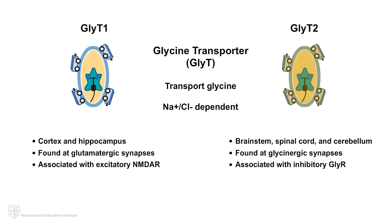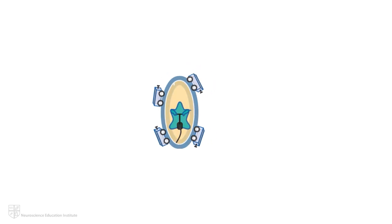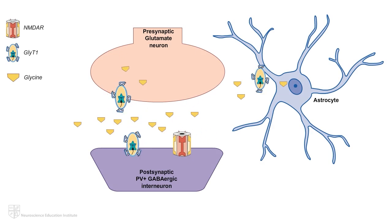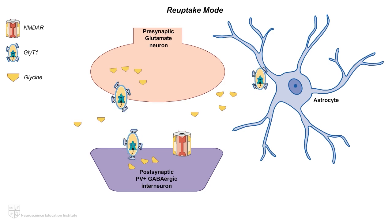With regards to this four-part Mechanism of Action animation series discussing NMDAR hypofunction in cortical networks underlying CIAS, we will be focusing on GlyT1. Within excitatory glutamatergic synapses, GlyT1 can be found on both presynaptic and postsynaptic neuron terminals, as well as on astrocytes. In its reuptake mode, GlyT1 serves to remove glycine from the synapse. GlyT1 also has the ability, in just the right conditions, to function in reverse mode, whereby GlyT1 transports glycine from inside the astrocyte into the glutamatergic synapse, increasing glycine levels there. For the purpose of this animation, we'll concentrate on GlyT1's reuptake function, where it serves to remove glycine from the synapse.